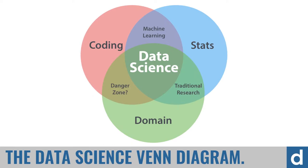You may have seen this chart before if you're coming from the world of data science — it's called the Data Science Venn Diagram, created by Drew Conway several years ago. He said that data science consists of three different fields put together: at the top left is coding, working with computers; at the top right is statistics and mathematics; and at the bottom is domain knowledge — you actually have to understand the field you're working in. When you combine all three, you get data science.